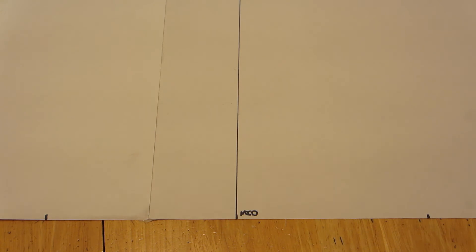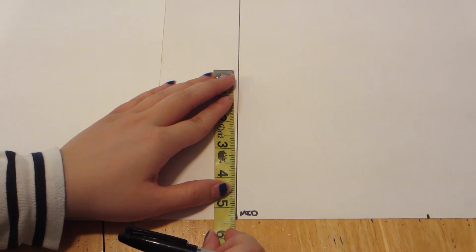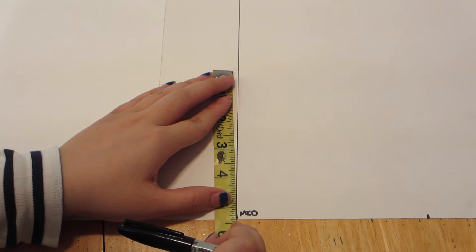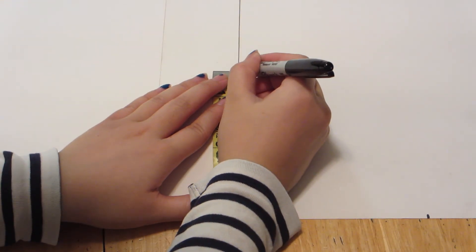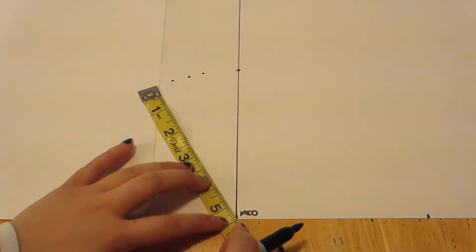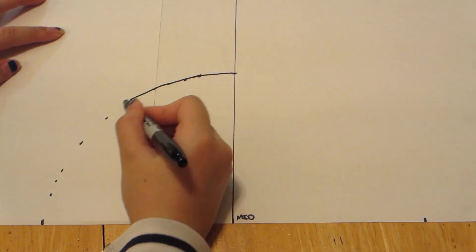Now, take your radius measurement and starting from the center point, mark out points so that you create a half circle once all the marks are connected. If you're making a half circle, use your diameter measurement instead of the radius.